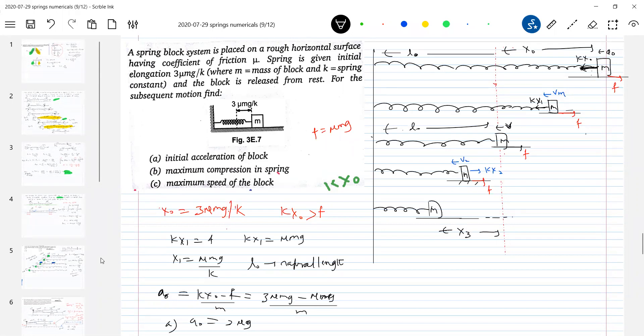Then, maximum speed of the block. When the speed of the block will be maximum, at mean position. So this is not red color, it's mean position. This is the mean position. This is the mean position. What do you mean by mean position? How to define mean position? The mean position is one where the net force should be 0. And the block will have maximum velocity.